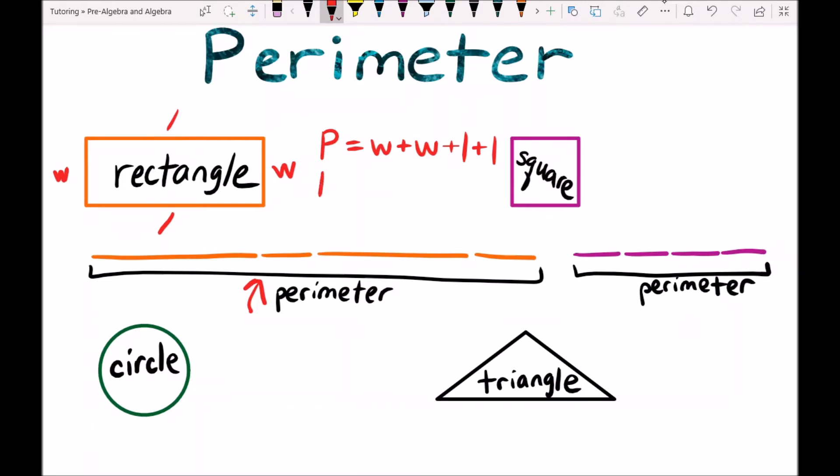And if we want to simplify this formula, we know that the perimeter is equal to 2 times W, 2 widths, plus 2 times L, two lengths.